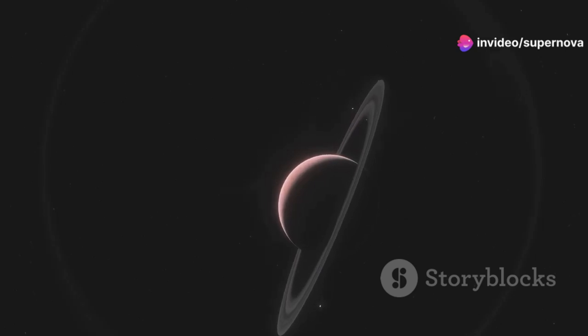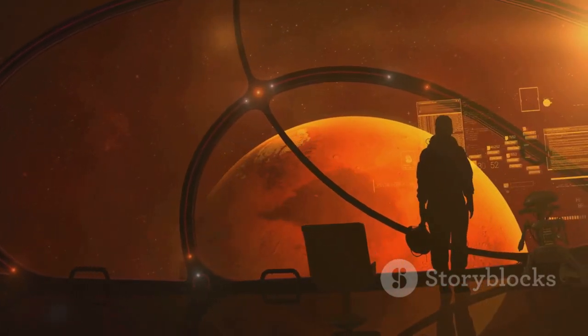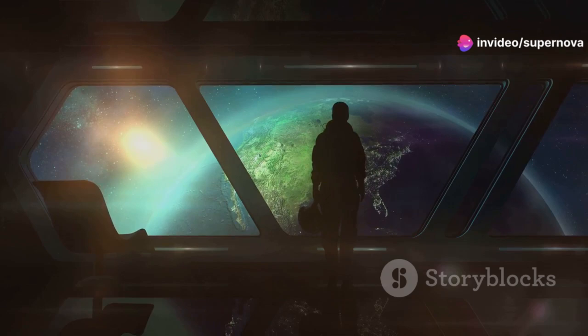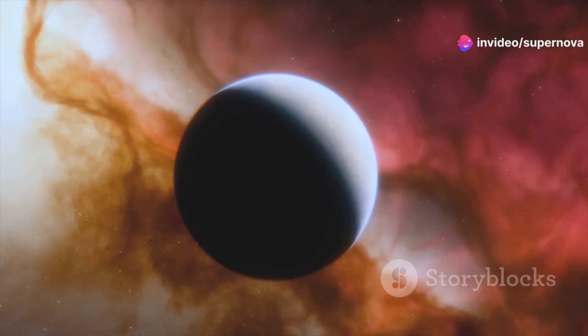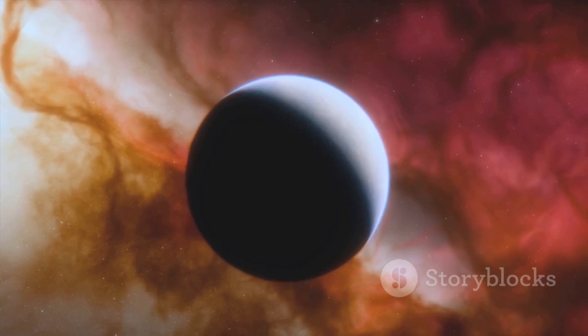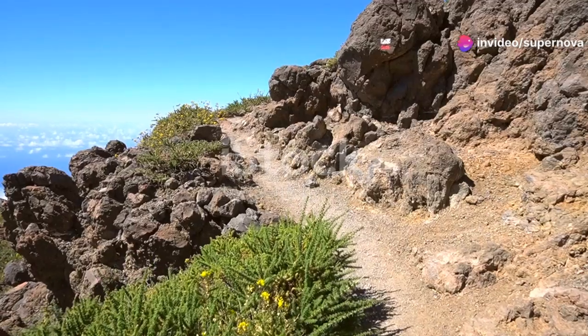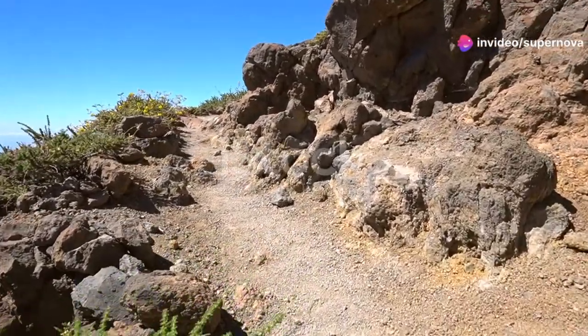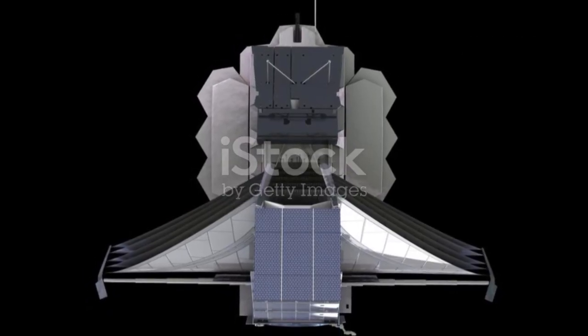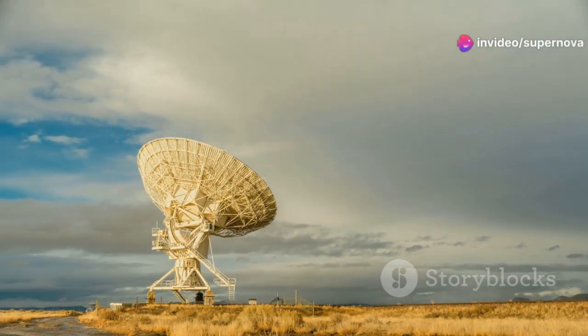JWST is studying Proxima Centauri b. It's looking for signs of an atmosphere. It's searching for biosignatures, chemical fingerprints of life. Finding life on Proxima Centauri b would be a monumental discovery. It would be the first evidence of life beyond Earth. JWST's observations are crucial. They will help us determine whether this planet is truly habitable. The search for life beyond Earth is one of the most profound scientific endeavors. JWST is at the forefront of this search. Its powerful instruments are giving us the best chance yet of finding life elsewhere in the universe.